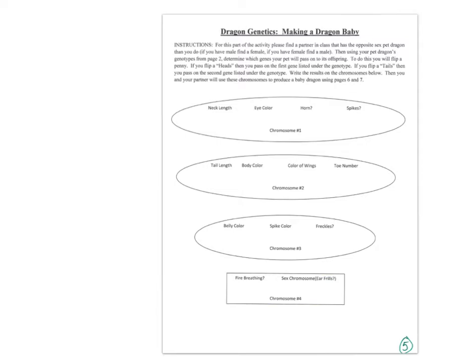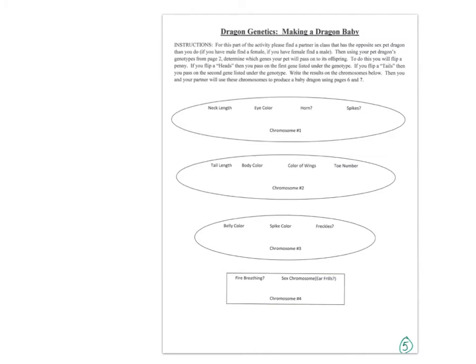When you make your baby, the first part is to make your egg or your sperm. That means you're going to have to flip a coin — heads or tails — to determine which allele you're going to give. You have two possibilities for each trait. For example, neck length could be long or short. If you have a heterozygous neck length, you're either going to give big L or little L.